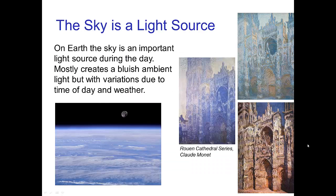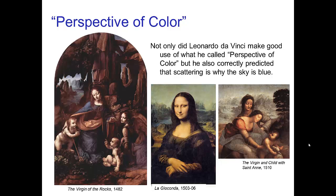This reminds us that the daytime sky is an important light source — it's not just the sun, but the atmosphere itself. This effect of atmospheric perspective was probably first utilized, understood, and described by Leonardo da Vinci, who called it 'perspective of color,' and he made very good use of it in the backgrounds of his paintings. Here are three of his more famous ones.